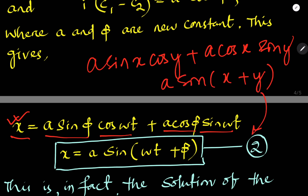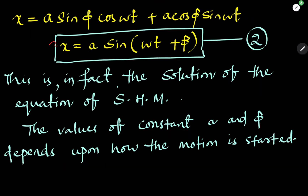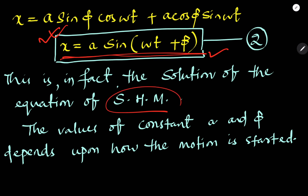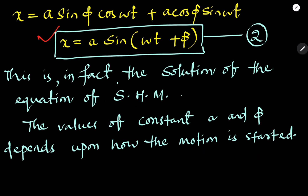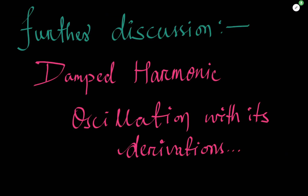Using the sine addition formula, this simplifies to x equal to A sine (omega t plus phi). This represents the solution of the simple harmonic oscillator, where the values of A and phi depend on how the motion is started. In further discussion, we will discuss damped harmonic oscillation with its derivations. I hope you all understood the topic — please comment for any queries, and if you like the video, like and share with your friends.